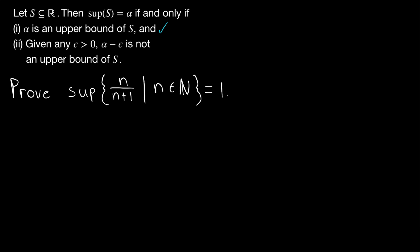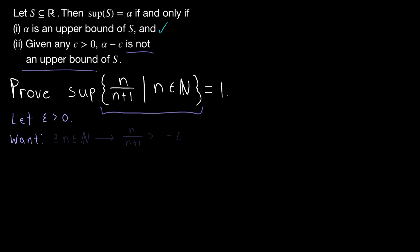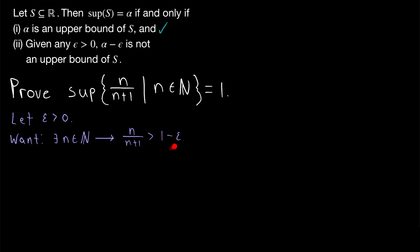You want to get used to reverse engineering your epsilon proofs — that's what we'll do a lot of in real analysis. We're going to start with what we want to prove. If we're given an arbitrary epsilon greater than 0, we want to prove that there's some element of this set greater than 1 minus epsilon, so that 1 minus epsilon is not an upper bound. We want to show there exists some natural number n such that n over n plus 1 is greater than 1 minus epsilon, and manipulate this into an equivalent inequality solved for n.